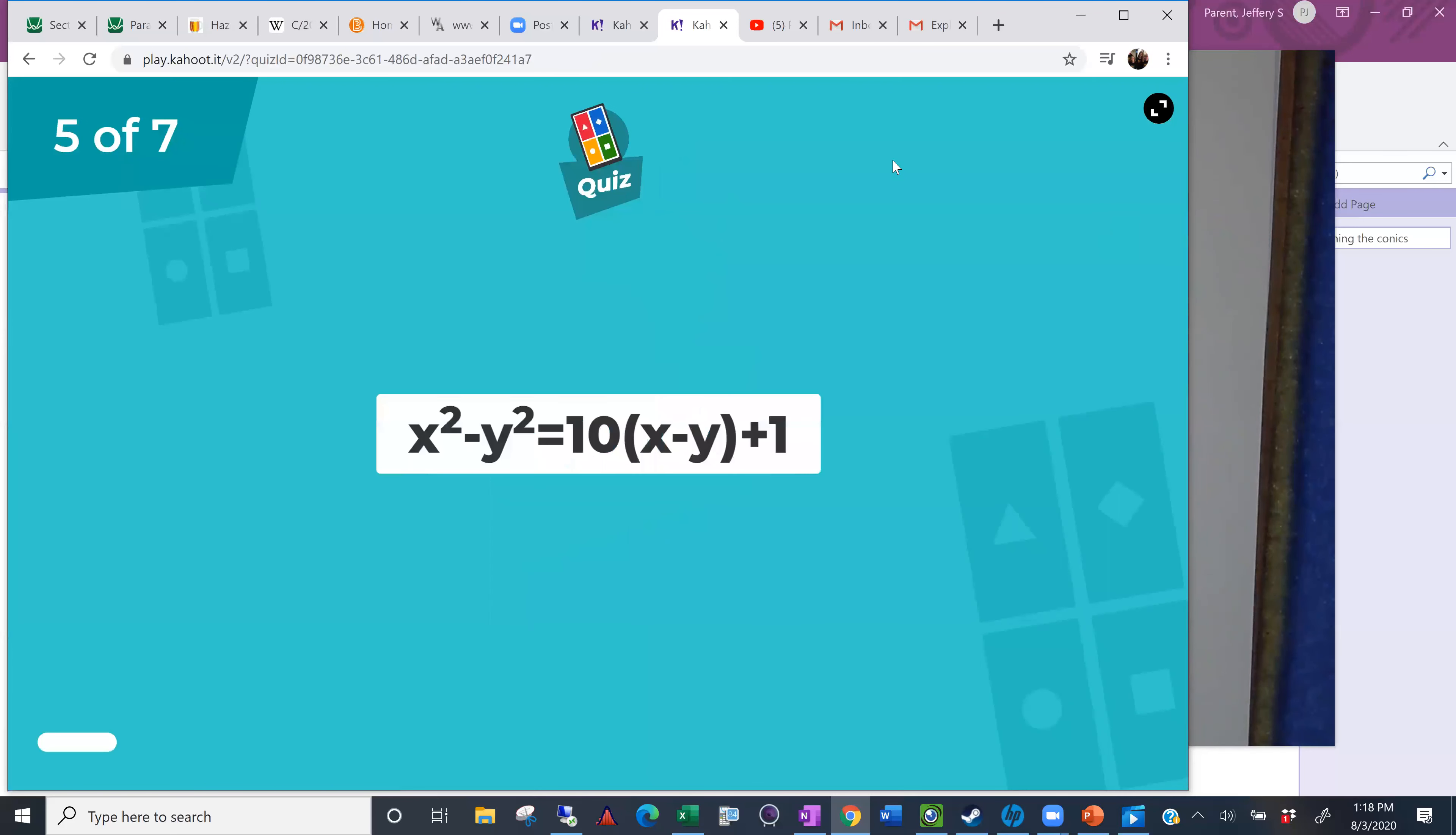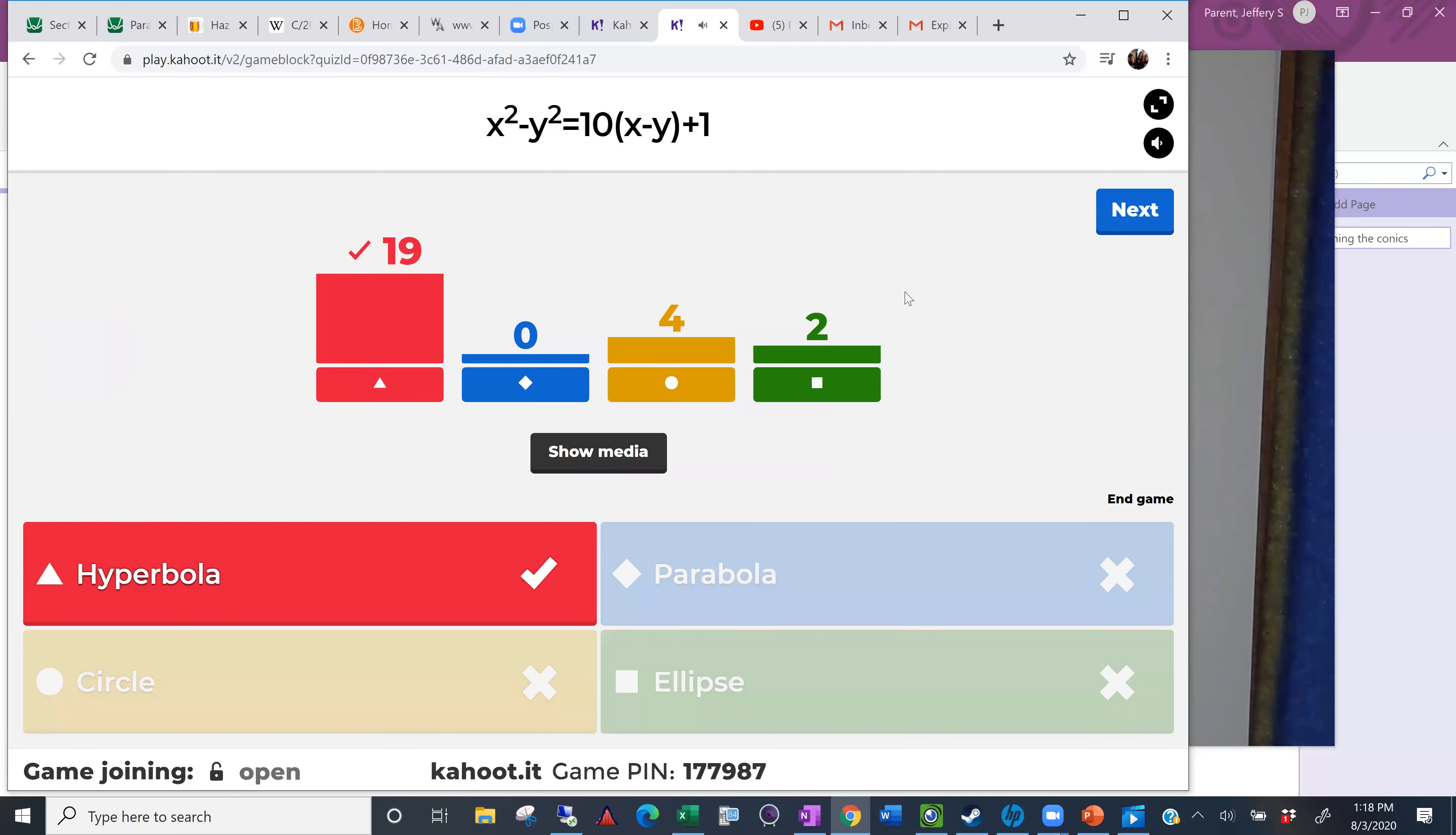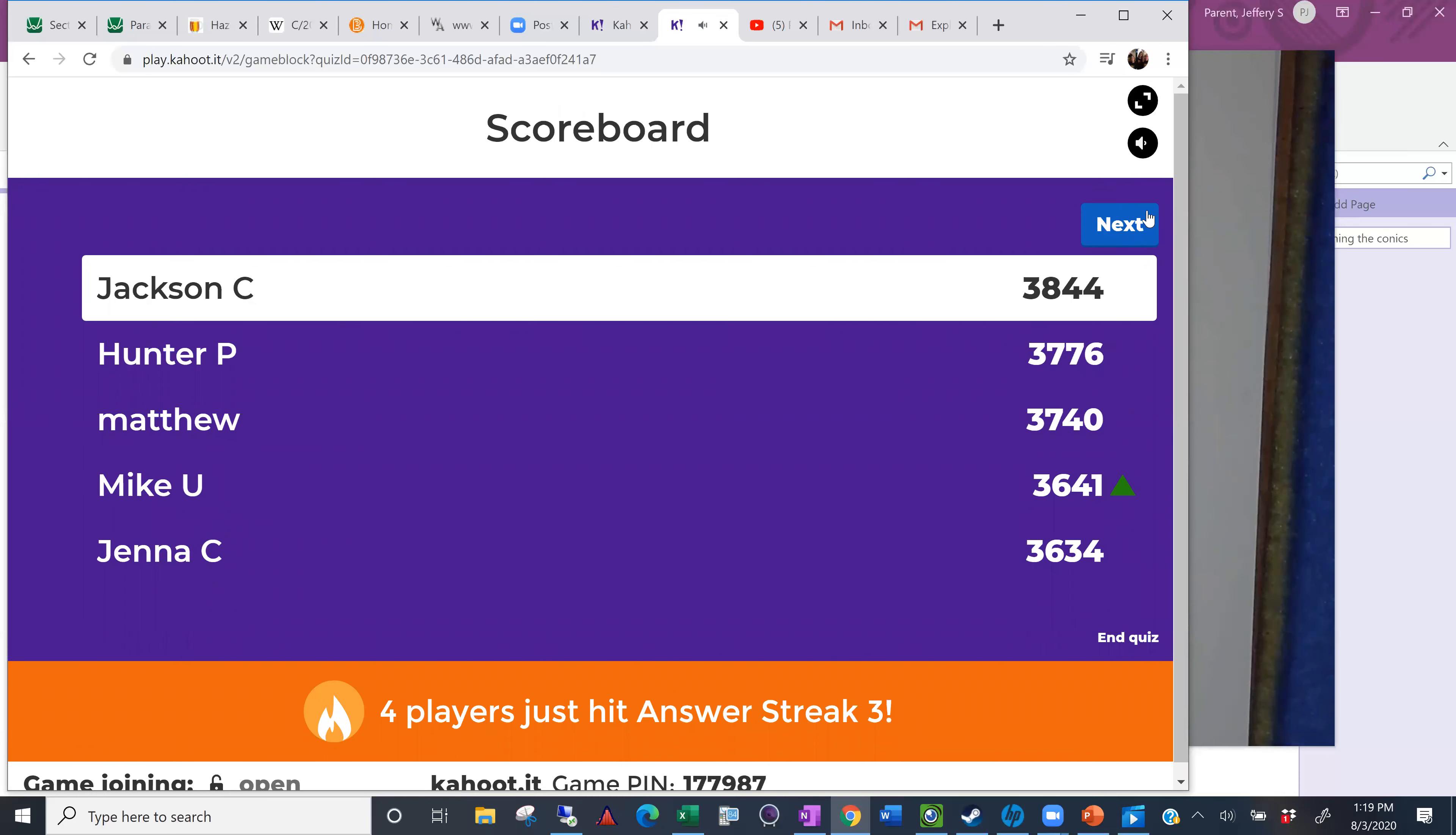Let's keep going. I think we've got everyone. Three seconds if you haven't answered. Bam. Well done. Hyperbola. Nice and easy because these two things have opposite signs. Let's see where we're at. Wow. Jackson, still leading it. Hunter. Matthew. It looks pretty consistent up there on the top five. Two more.